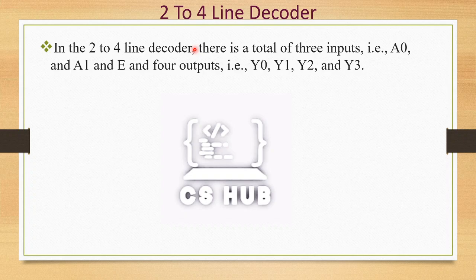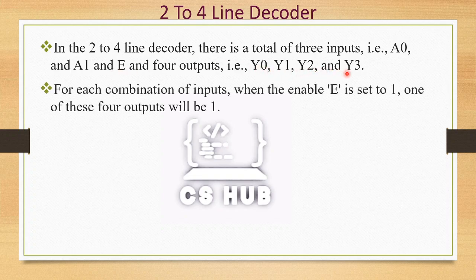Considering this example in detail: there are 2 data inputs A0 and A1, one enable input E, and 4 outputs — Y0, Y1, Y2, and Y3. For each combination of inputs, when enable E is set to 1, one of these 4 outputs will be 1.